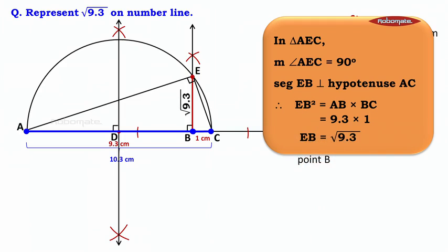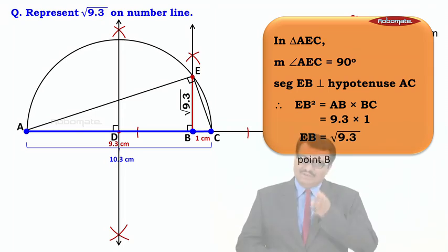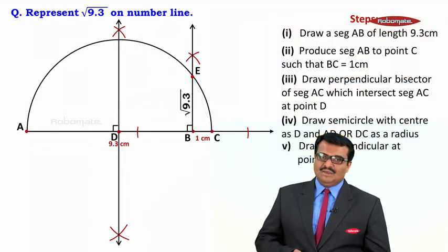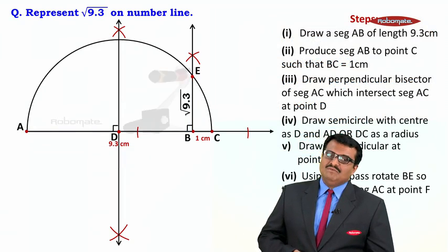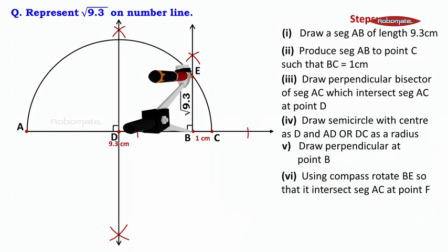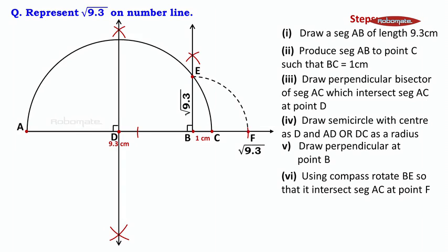They are asking us to represent this on the number line, not as a perpendicular like this. So what we will do is, using the compass, we will rotate BE so that it intersects AC at point F. Needle at B, pencil at E — rotate it so that it intersects segment AC at point F. This point F represents √9.3 on the number line.